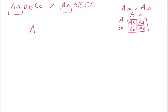The particular genotype we're looking for requires big A little a. Going back to our mini Punnett square, we see that crossing big A little a with big A little a gives a 50% chance for big A little a. That's exactly what we want. So we put that into a fraction: the probability of getting big A little a is one half.